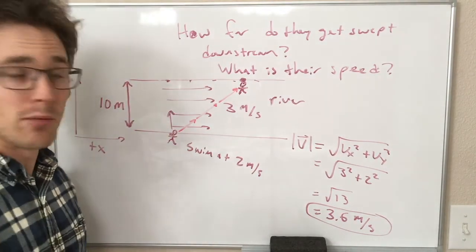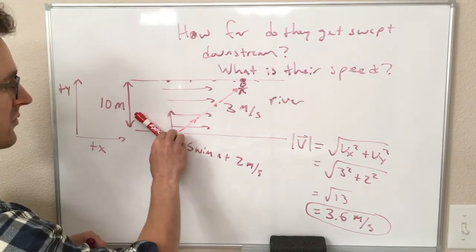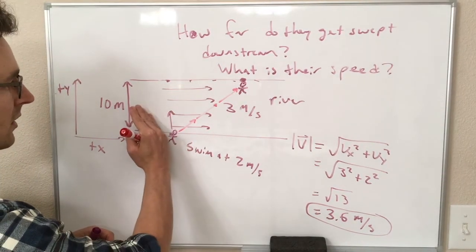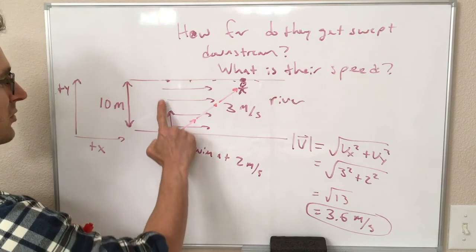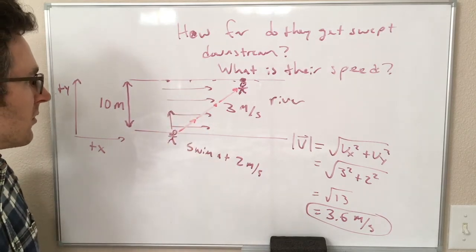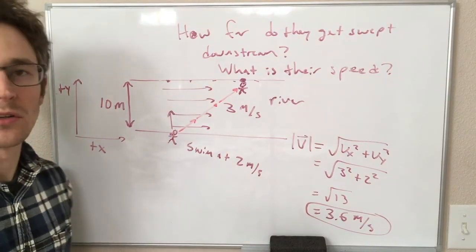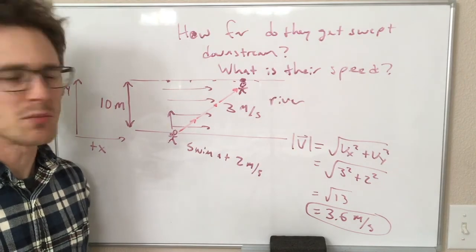It would be another problem to say what angle would they have to swim at at 2 meters per second in order to be able to make it straight across. And I think for these particular numbers, I think it turns out to be impossible.